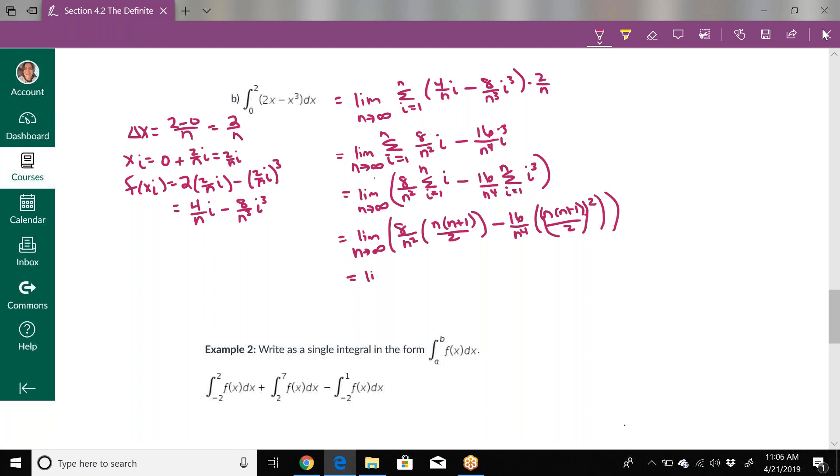We need to work some of this out. You can do 8 over 2, which is 4. I split the n squared so it was under each of these: n over n and n plus 1 over n. Then minus, this is not 2, this is 4. So 16 divided by 4 is 4. We can break each of the n's over one of those, so n squared over n squared, and then n plus 1 over n twice because that's squared.